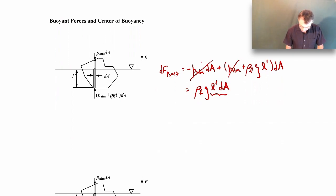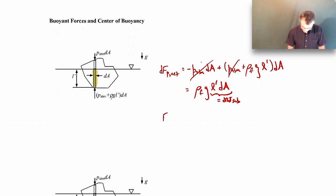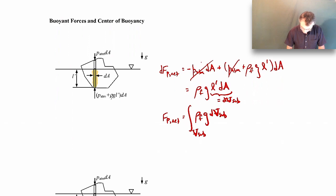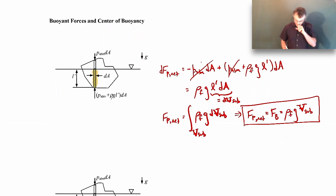If you look at this for a moment, L-prime times dA is really just a little bit of submerged volume — dV-sub. So if we want the total net pressure force, we integrate over the entire submerged volume. The density and gravity come outside the integral, and what we're left with is that the net pressure force — which we call the buoyant force — is rho-f times g times the whole submerged volume. That is the buoyant force.